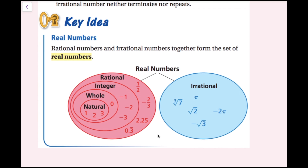Some examples of irrational numbers are the cube root of seven, because it's a cube root of a non-perfect cube; pi; the square root of two, which is a square root of a non-perfect square; negative two pi, which is irrational because anytime you see a simplified expression with pi in it, it's going to be irrational; and the negative square root of three, since we are taking a square root of a non-perfect square. We cannot write any of these as a ratio of two integers.